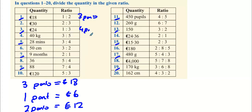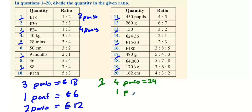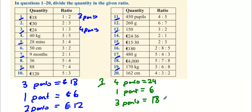Next we're going to do question three. You add one and three together, and this time there are four parts. So four parts equals 24. This implies that one part — when you divide both sides by four — one part will be six. And this also implies that three parts will be six multiplied by three, which is 18.